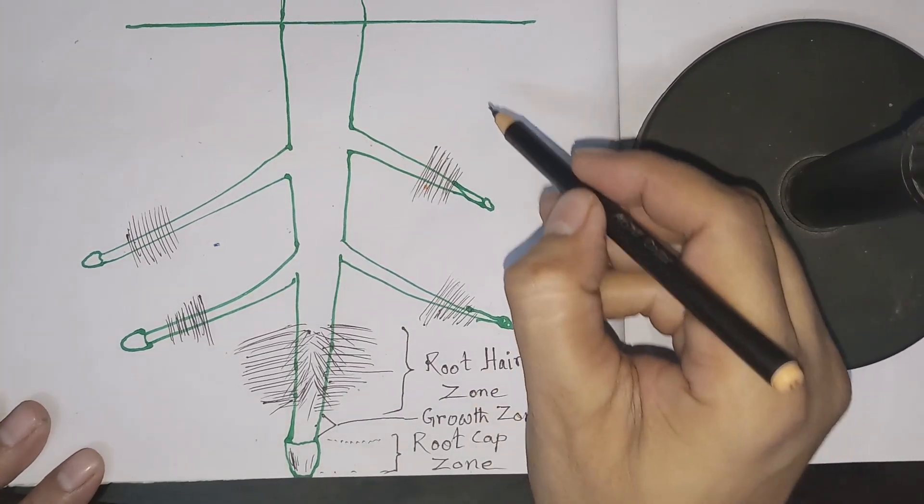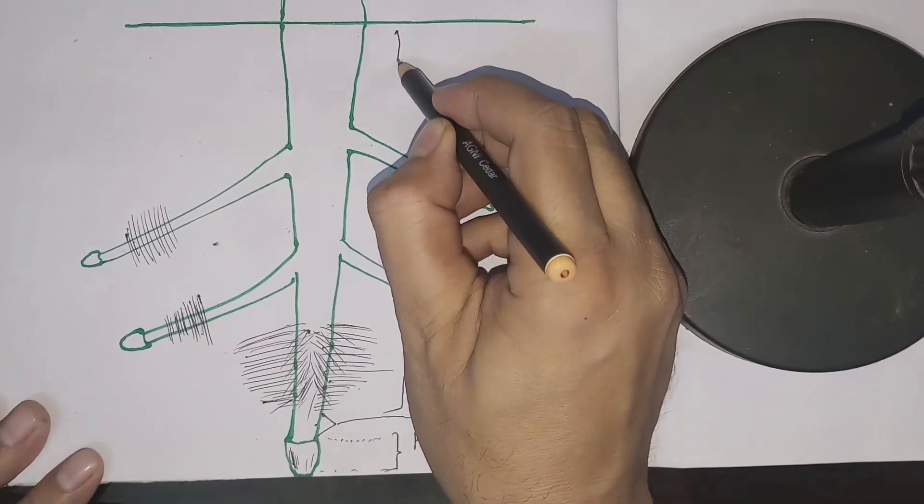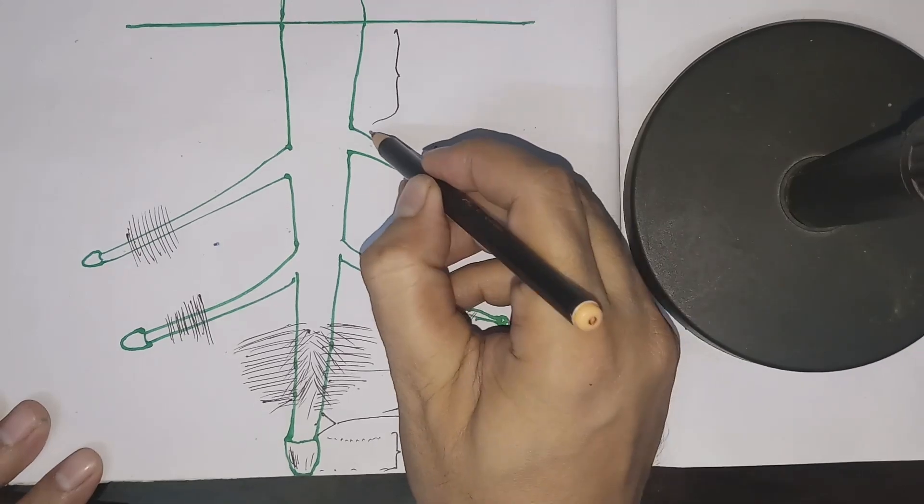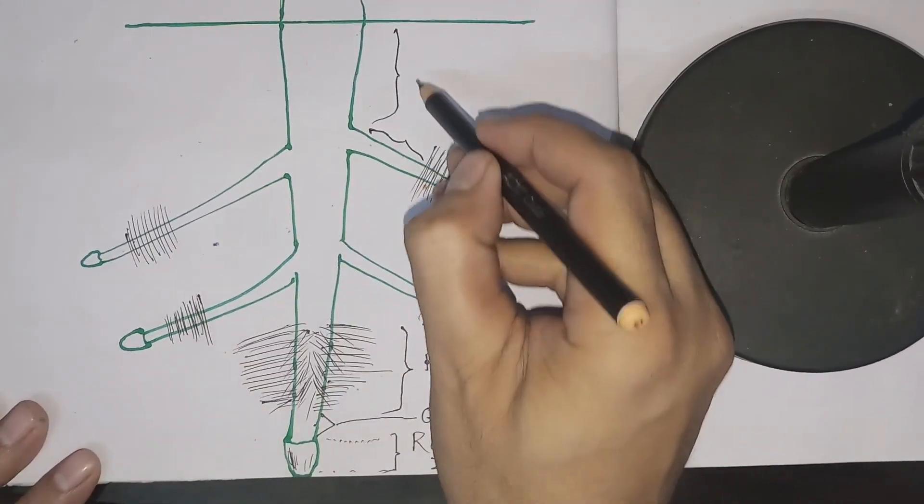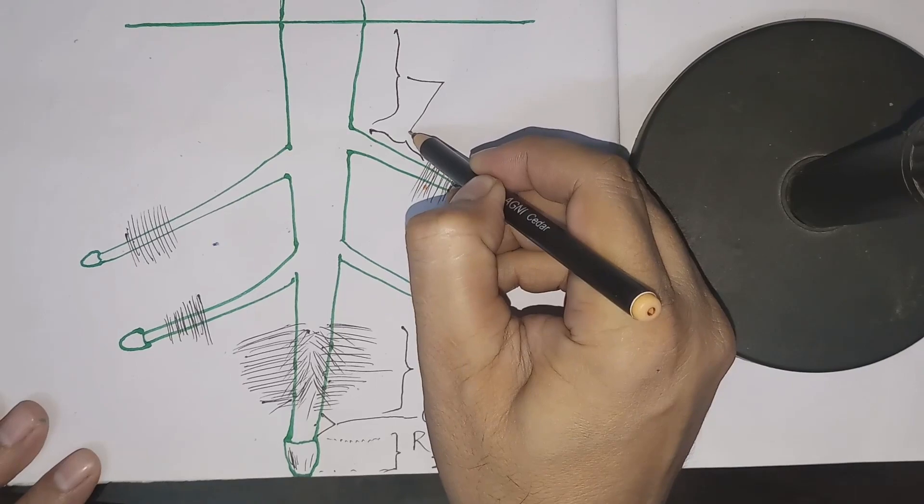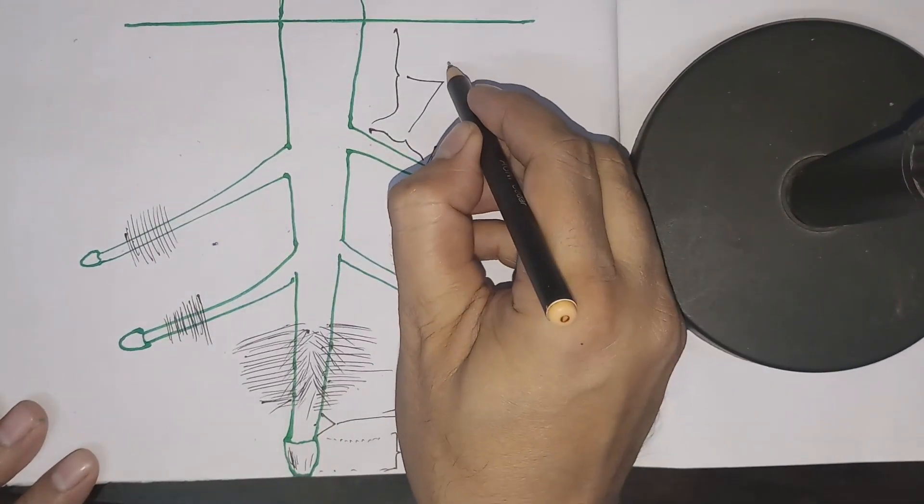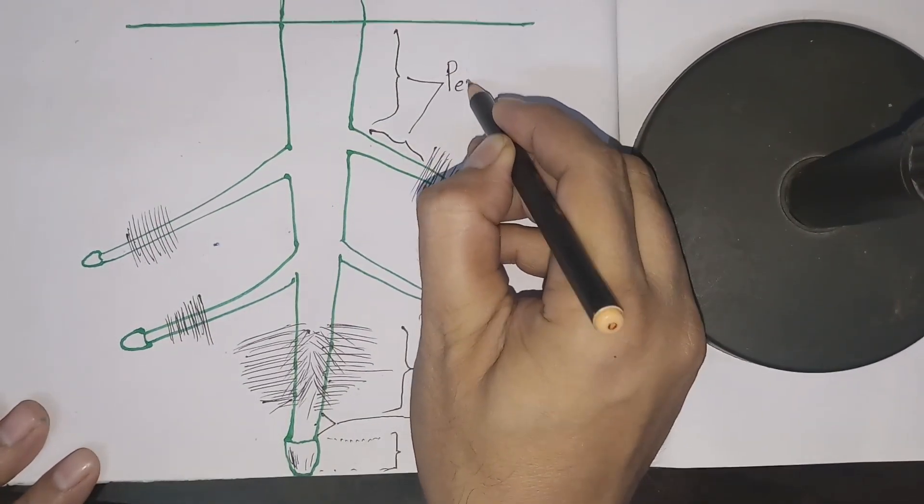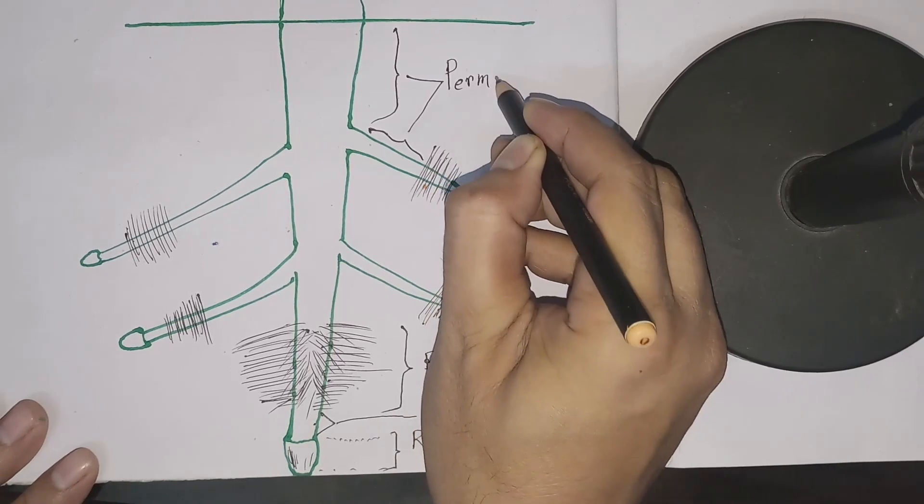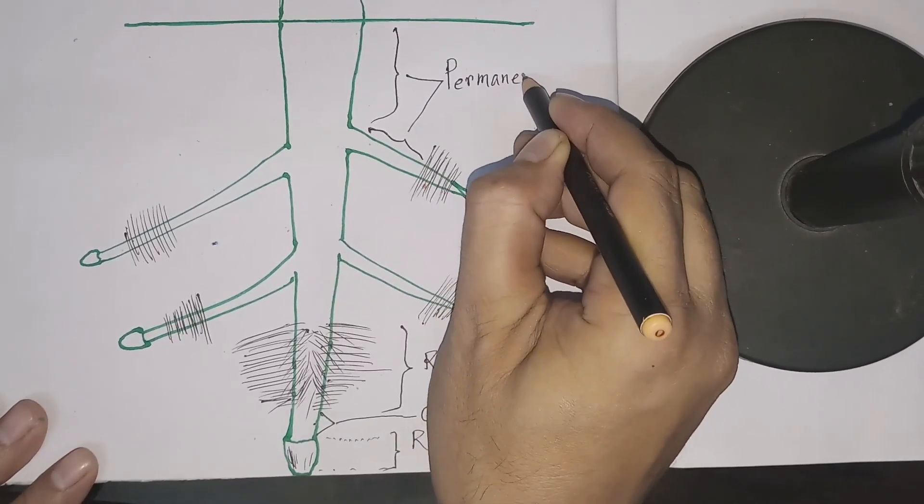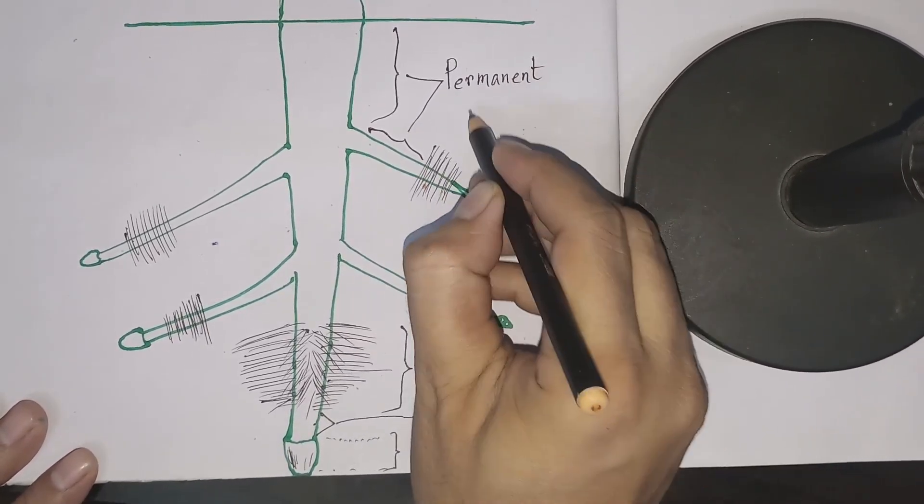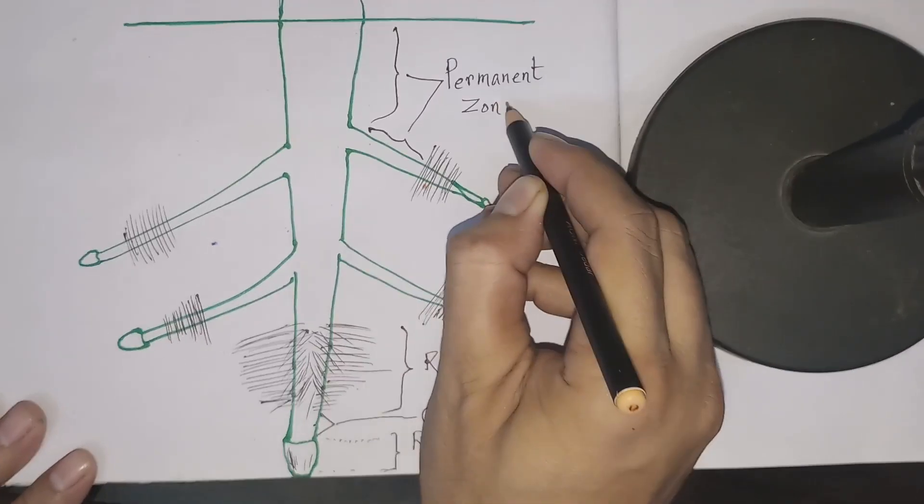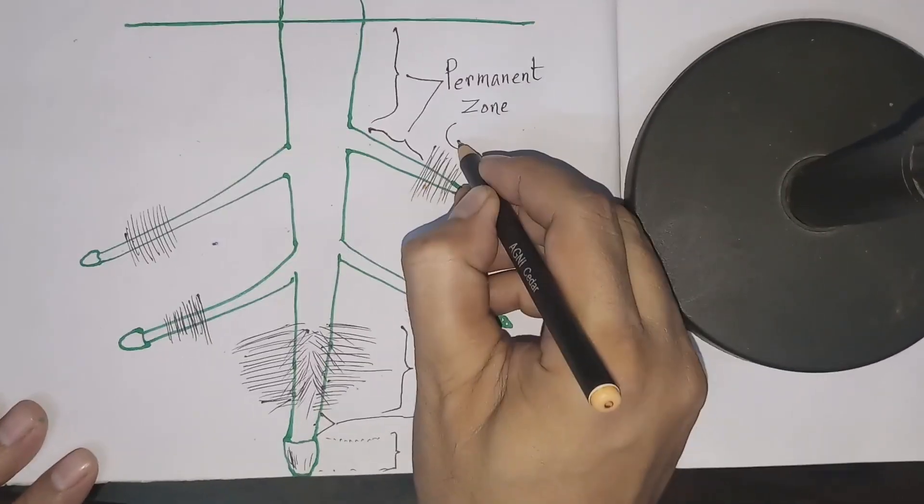So this region always helps to grow up the root. So this is the growth zone. And above all these regions, mainly above the root hair zone, the region is known as permanent zone because here no meristematic tissue is found, so the cells do not divide in this region and here no growth is observed.